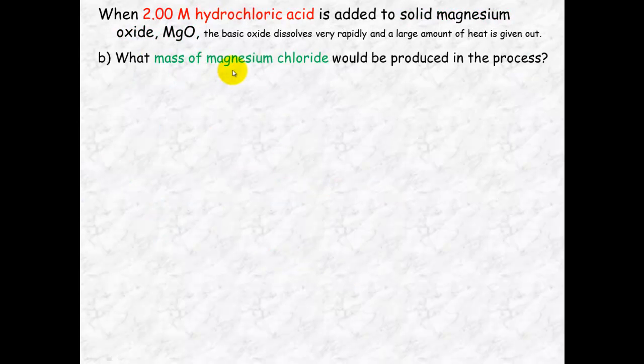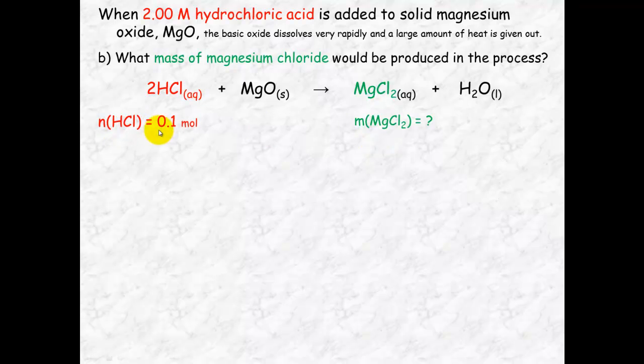Part B, what mass of magnesium chloride would be produced. So now I'm trying to figure out the mass of the magnesium chloride. I already know the number of mole of hydrochloric acid, and I've already calculated the number of mole of magnesium oxide. Now you can use either of these to calculate the amounts of magnesium chloride. The easiest way is though, there's a 1 to 1 ratio here between the magnesium oxide and the magnesium chloride. So make life easier for yourself. Use this same number of moles because it's 1 to 1. So the number of moles of magnesium chloride equals 0.05 mole.